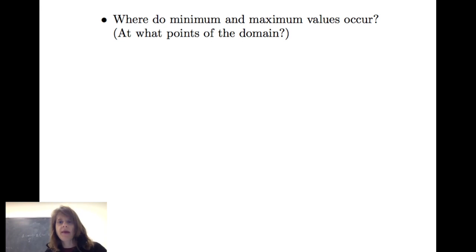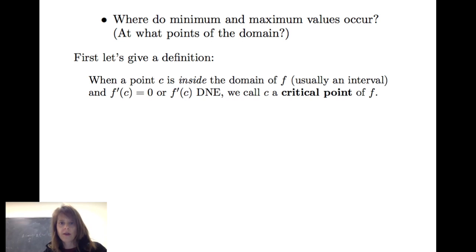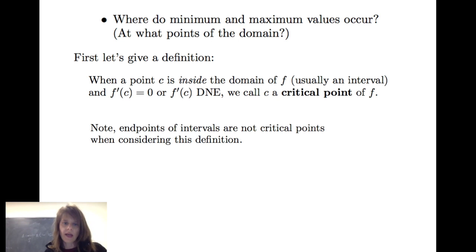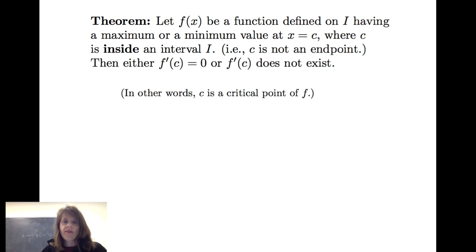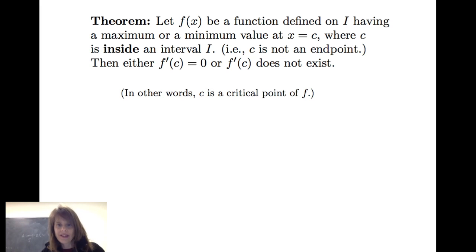Let's consider the second question: Where do minimum and maximum values occur — at what points of the domain, where should we be looking? First, the definition: when a point C is inside the domain of f — inside the interval, not an endpoint — and f prime of C equals zero or f prime of C does not exist, we call C a critical point of f. We have a theorem: if f of x has a maximum or minimum value at x equals C, where C is inside the interval, then either f prime of C equals zero or f prime of C does not exist — in other words, C is a critical point of f.